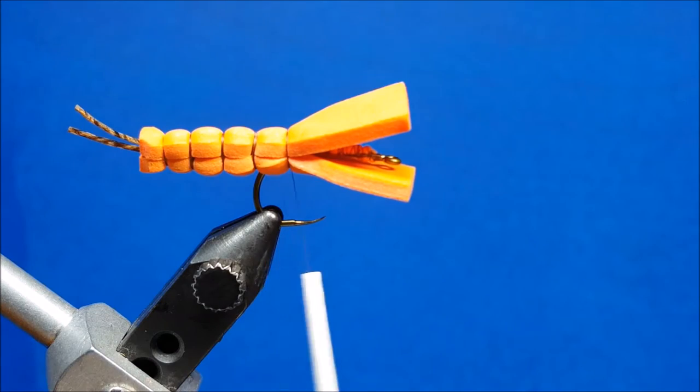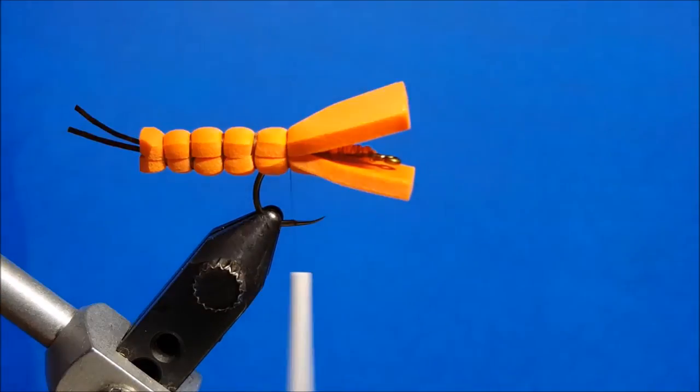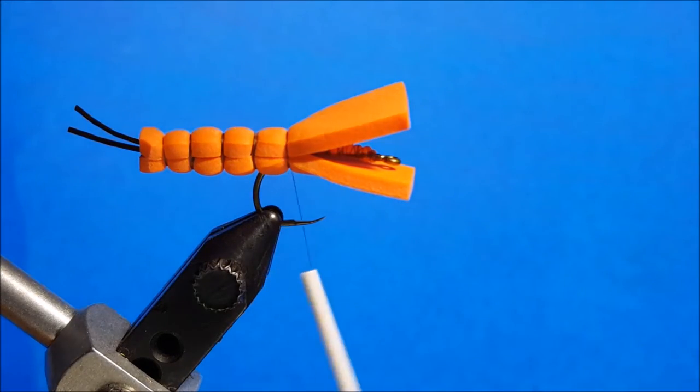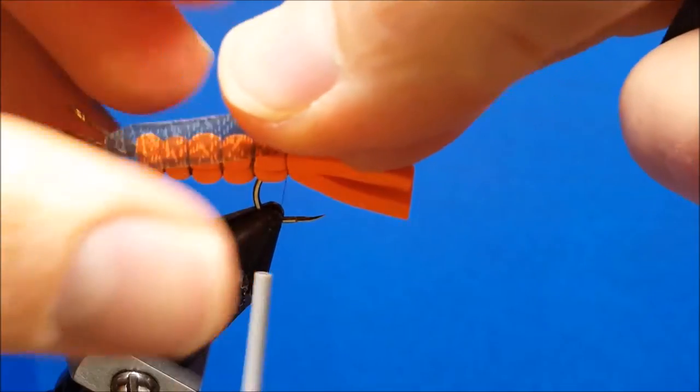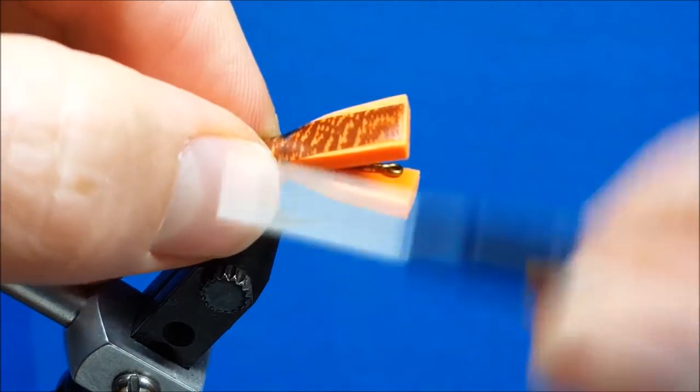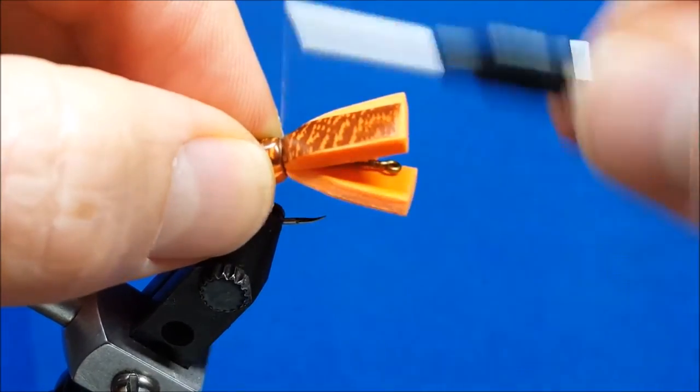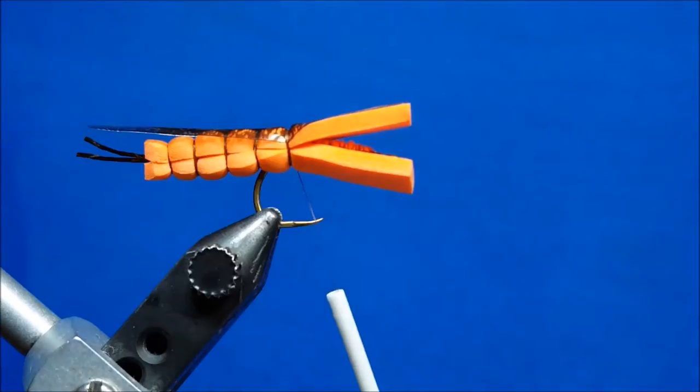For that I have a piece of thin skin, this is Natural Bastard mottled, and so we're going to peel that off the backing. When I put this on there, I want it to extend close to the length of those tail fibers, back off of the abdomen there. Hold that in place, catch it with three or four wraps. Should look something like that.